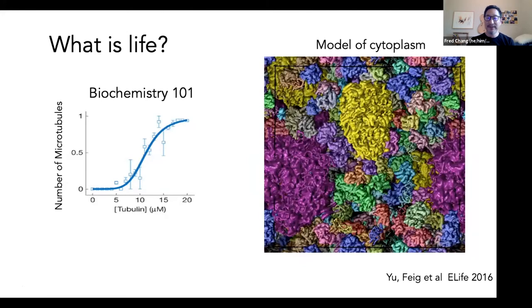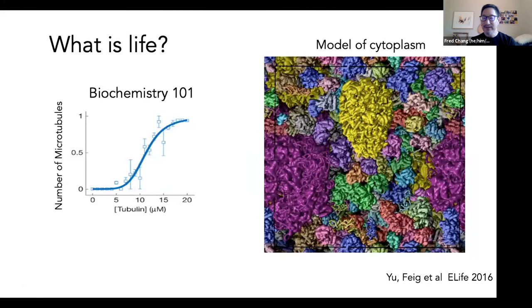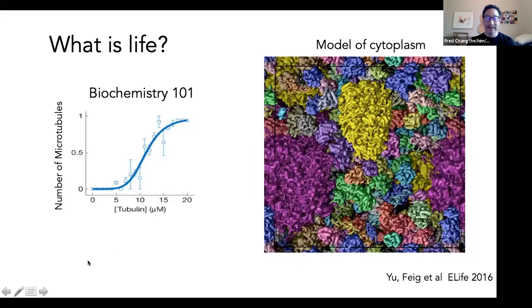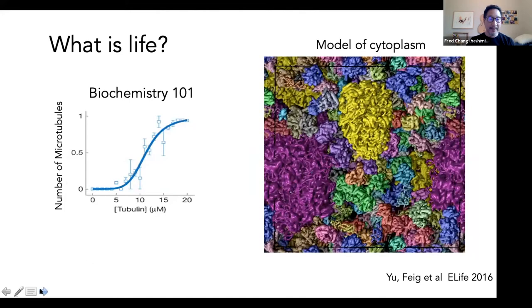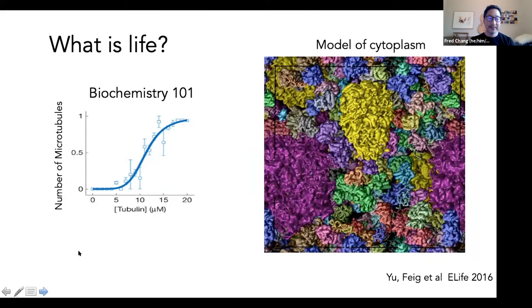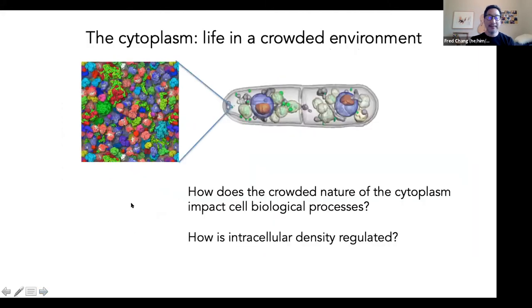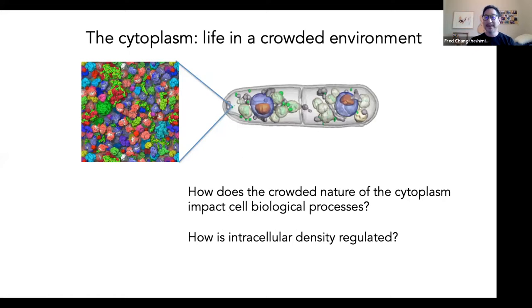They're so crowded that they actually can deform each other. You can imagine that it's very difficult for things to actually move around in such an environment. My lab has been interested in studying this cytoplasm and how does it impact cell biology in living cells. We're asking questions such as how does the crowded nature of the cytoplasm actually impact cell biological processes, and how is this density actually regulated?